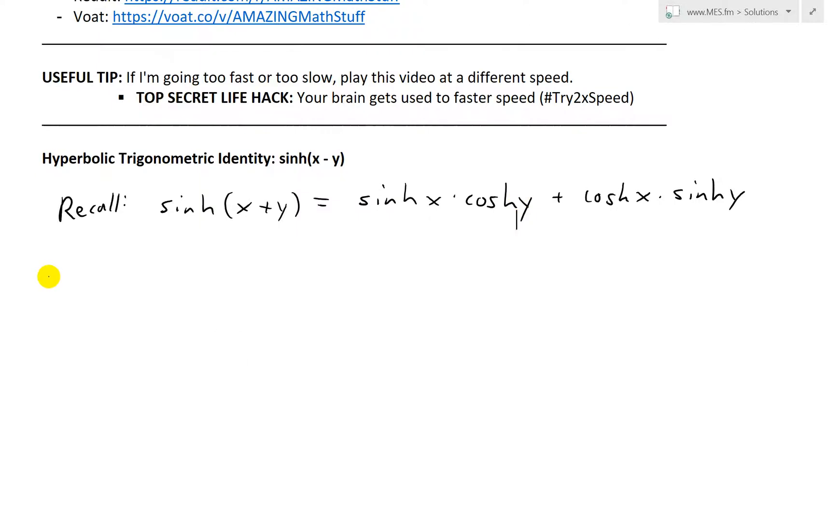so thus using this identity, make sure to watch out and put the link in the description below, using that identity what we'll have is sinh now x minus y. Only thing we're going to do is replace y with minus y. So this equals to sinh x times by cosh minus y or negative y plus cosh x sinh negative y.